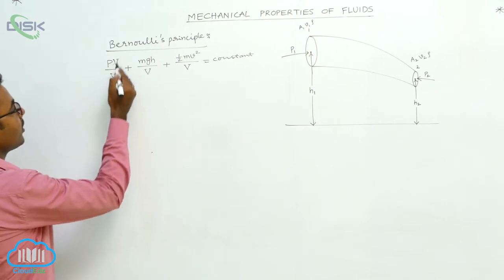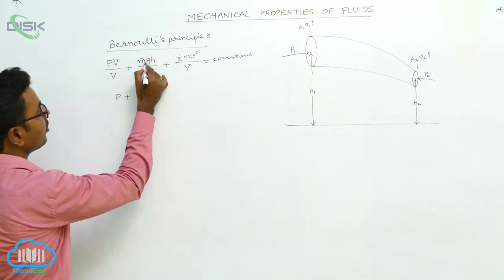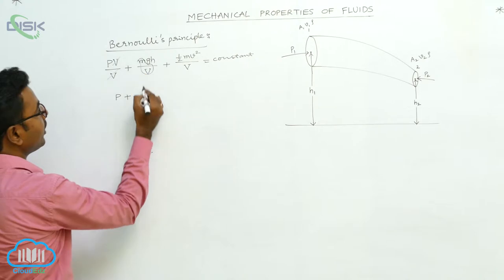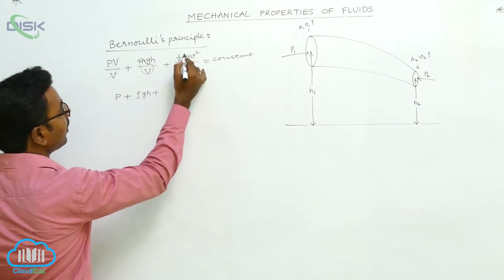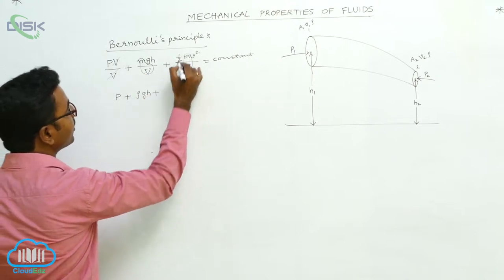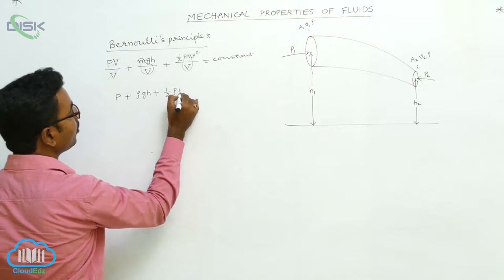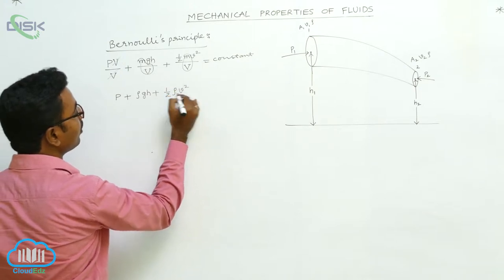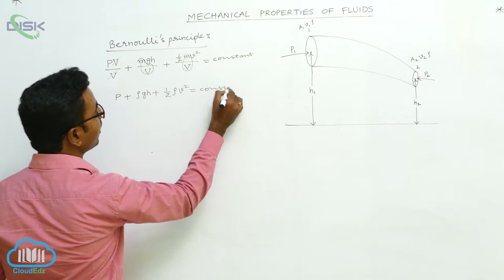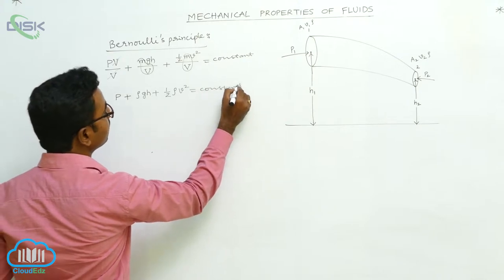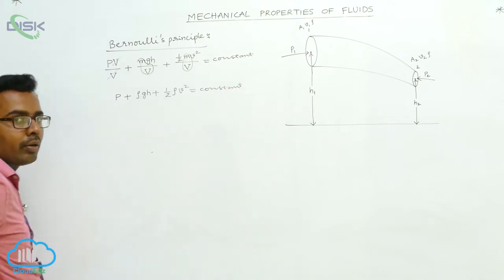When volume is cancelled, pressure remains. Mass divided by volume is density rho, so potential energy per unit volume becomes rho·g·h. Similarly, kinetic energy per unit volume becomes half·rho·v². So the Bernoulli's equation is: P + rho·g·h + half·rho·v² = constant.